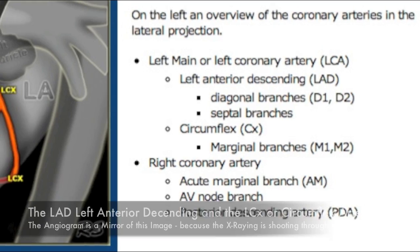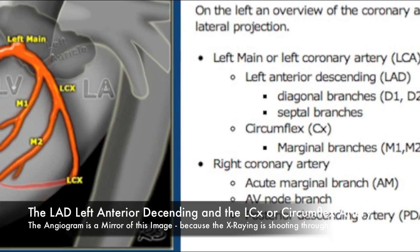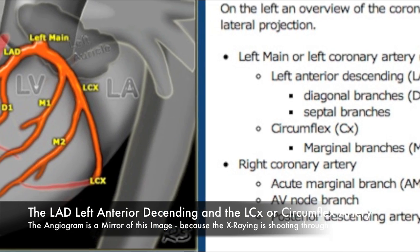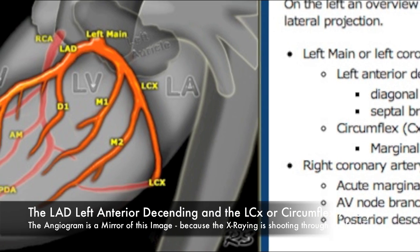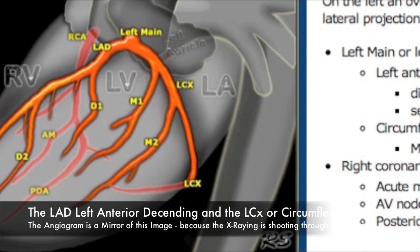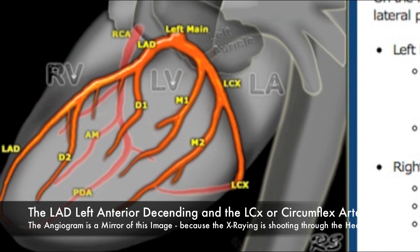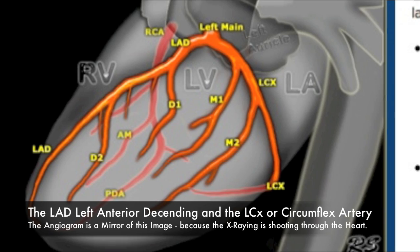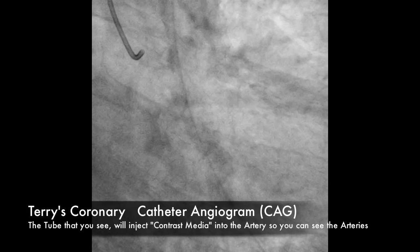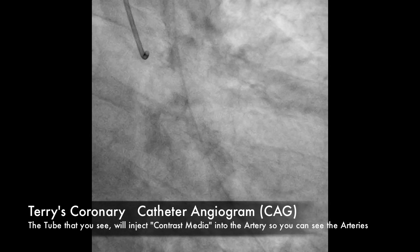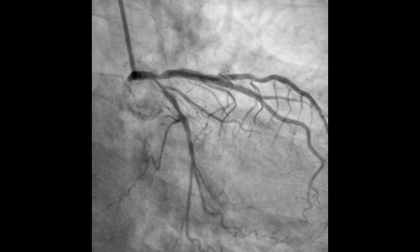In the teaching images, we see the left anterior descending artery (LAD) and the LCX circumflex artery. The angiogram we're going to see is an X-ray shooting through the heart, so it would be the mirror image of this image here.